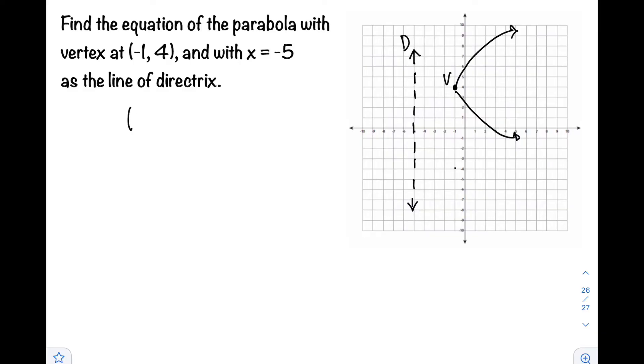If the parabola opens to the right, the equation we will use is (y - k)² = 4p(x - h). Since the vertex is given, h = -1 and k = 4. What we need now is the value of p.